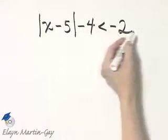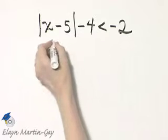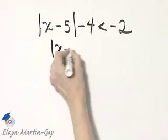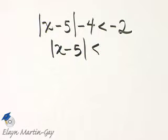Let's add 4 to both sides of this inequality. If I add 4 to the left side, I just have the absolute value of x minus 5. If I add 4 to the right side, I have negative 2 plus 4, or 2.